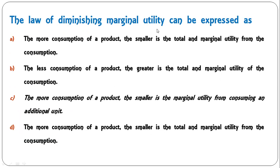Next: 'The law of diminishing marginal utility can be expressed as' — A: the more consumption, the smaller the total marginal utility; B: the less consumption, the greater the total marginal utility; C: the more consumption, the smaller the marginal utility from consuming an additional unit; or D: the more consumption, the smaller the total marginal utility? The correct answer is C: the more you consume, the marginal utility from each additional unit will decline.